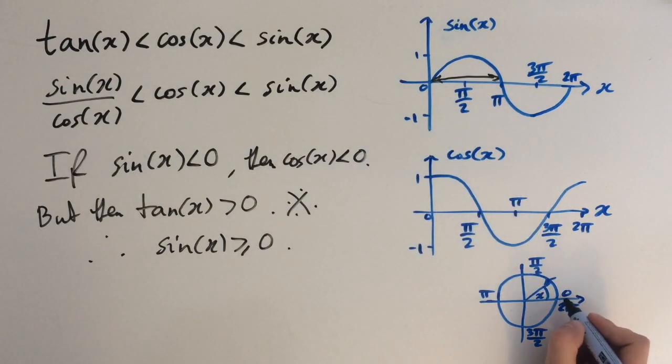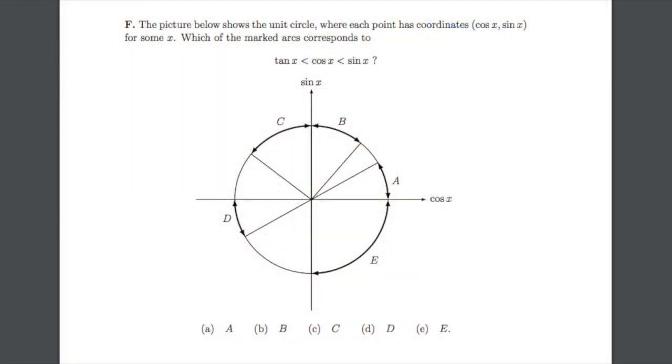From this we can work out that the only allowable arcs are in the top half of the circle because x is between 0 and π. Looking back at the question, we can rule out answers d and e immediately as these are on the bottom half. Now we've only got three answers to deal with.